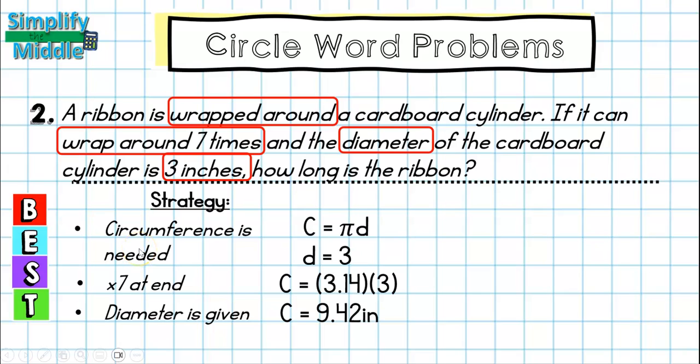When I total this, remember I had to multiply by 7 at the end. So 9.42 times 7 is going to give me 65.94 inches, and then finally to restate, the ribbon is 65.94 inches long.